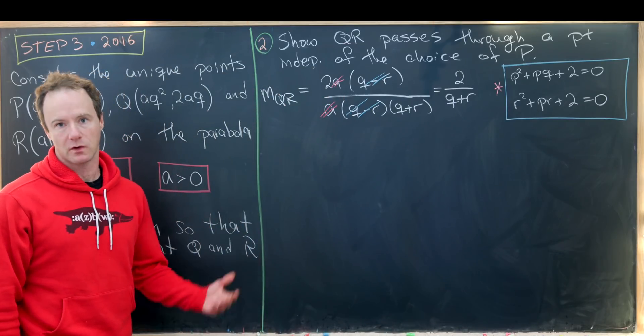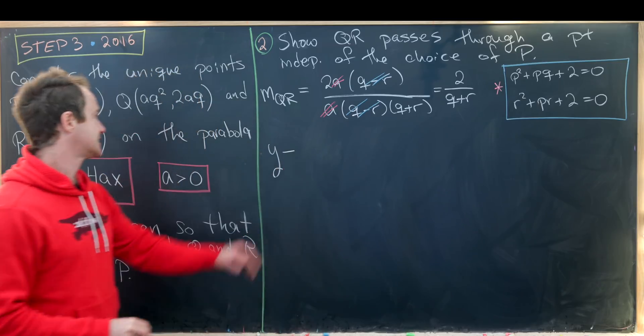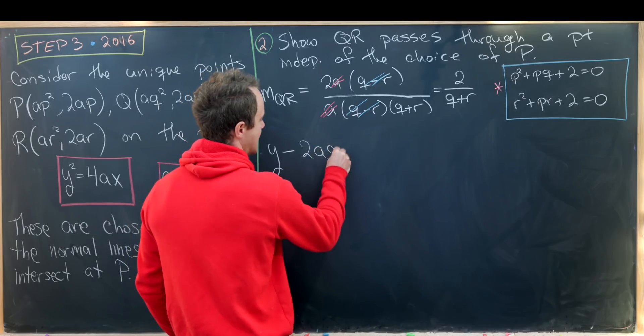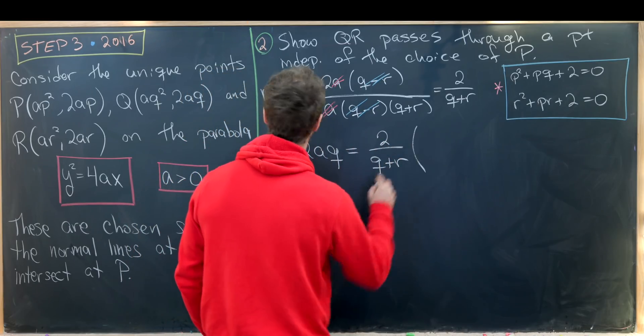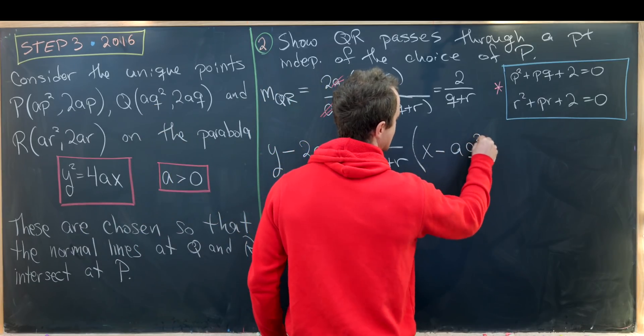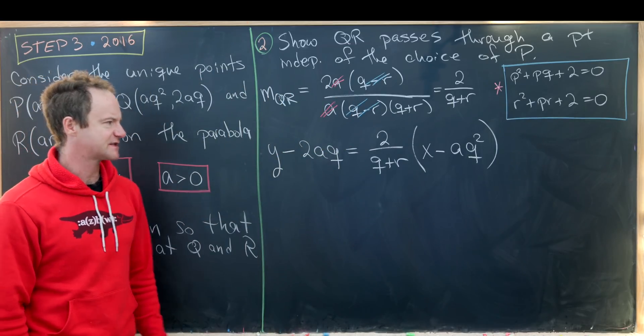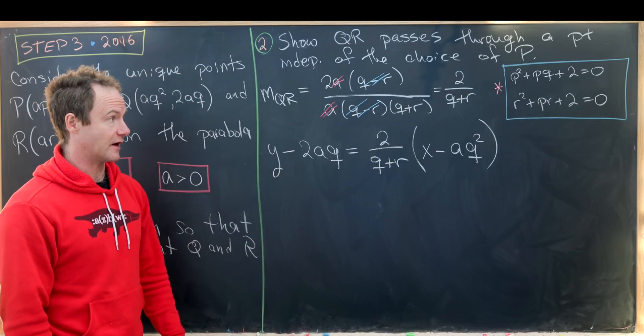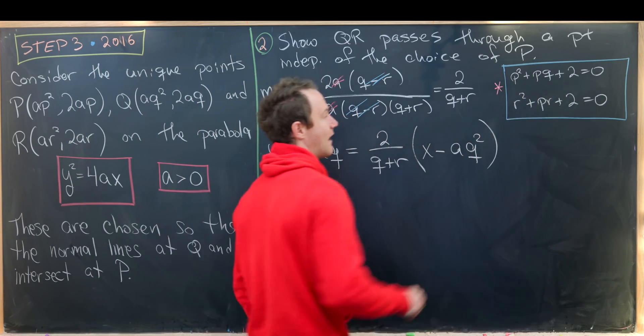Now we can use point slope form to write down the equation of this line. We have y - 2AQ = (2/(Q+R))(x - AQ²). So now let's see if we can simplify this. The one thing that bothers me is this Q+R in the denominator there. But we can actually simplify that quite a bit using what we had on the last board.